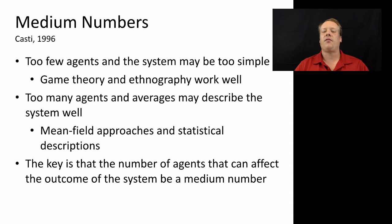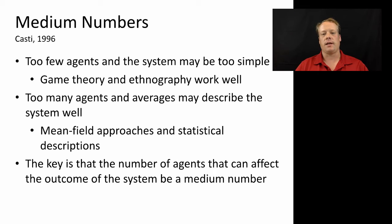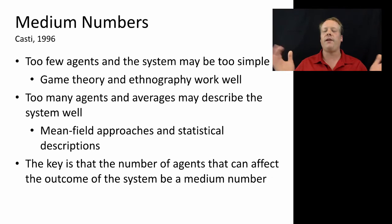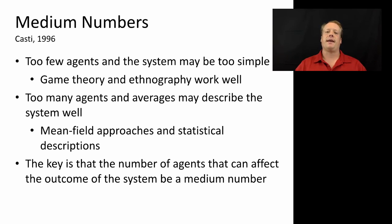On the other hand, if there are many, many agents and they all seem fairly homogeneous, then averages may describe that system well, meaning a mean field approach or statistical description might do a better job. The key is that the number of agents that directly affect the outcome of the system should be a medium number. You could have an almost infinite number of homogeneous agents, but if you have a small group of heterogeneous agents that can dramatically affect the outcome, agent-based modeling may work well.